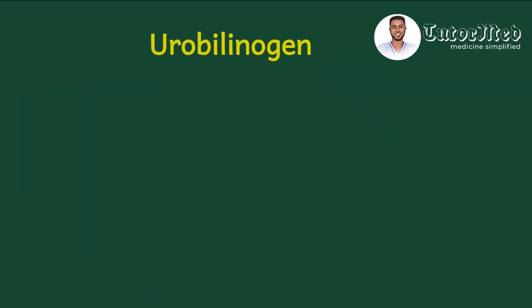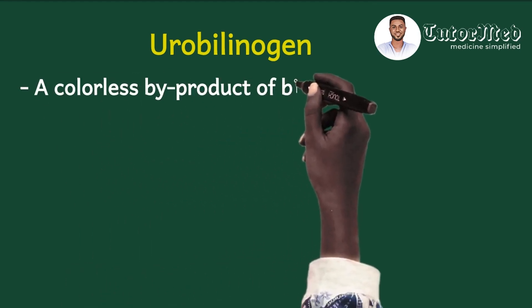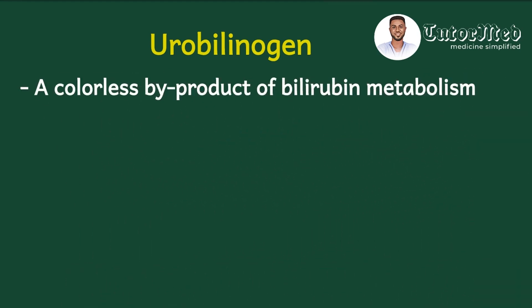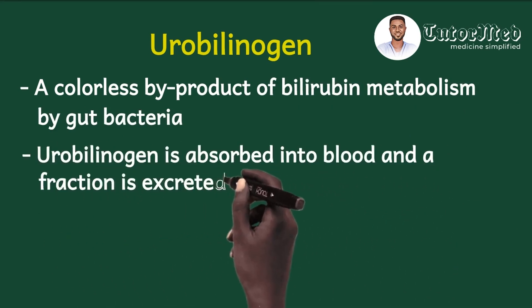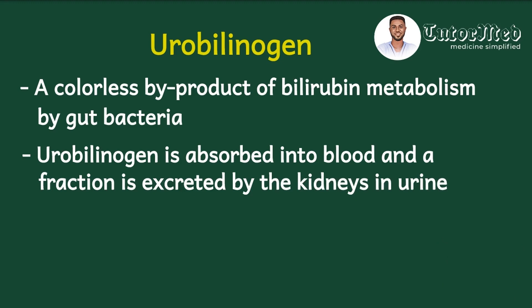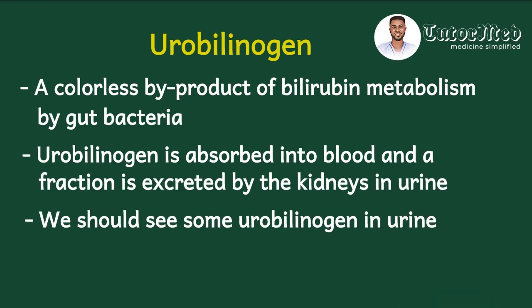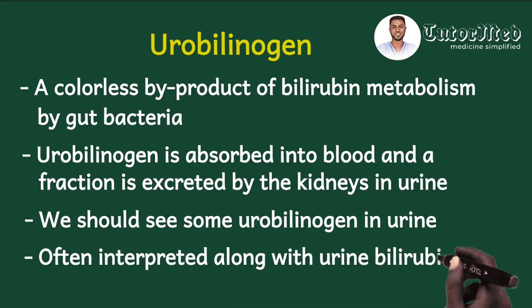Urobilinogen is one of the products formed when gut bacteria break down conjugated bilirubin. It is a colorless byproduct of bilirubin metabolism. It is reabsorbed into the blood and a fraction is excreted by the kidneys into the urine, so we normally expect to see some urobilinogen in urine. Urobilinogen in urine is often interpreted alongside urine bilirubin to make clinical sense.